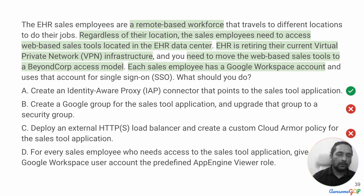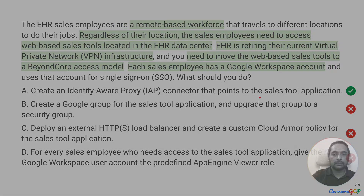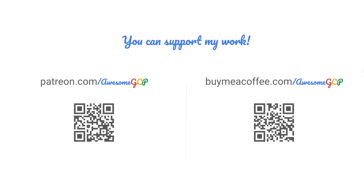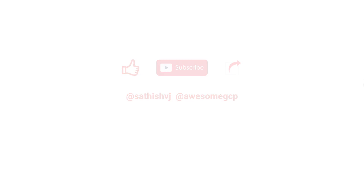Looking at it overall, the only option that suits us — and suits us very well — is option A: create an Identity-Aware Proxy or IAP connector that points to the sales tool application. If you find these videos useful, consider supporting me on Patreon or buy me a Ko-fi. Don't forget to like, share, and subscribe for more learning videos on Awesome GCP.